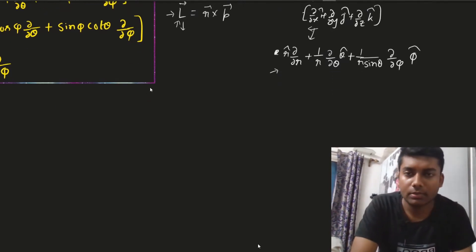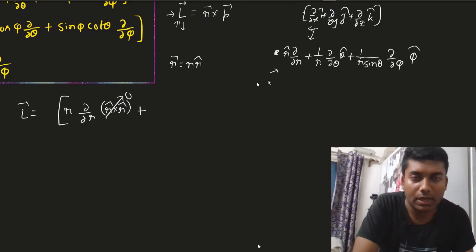Now we have to find this. So l vector is equals to r cross p. So r cross p means r vector is r modulus of r magnitude of r into r cap. So this will r into del del r r cap cross r cap. This is the first term and you can easily understand the r cap cross r cap is equals to 0. So the first term will be 0. Now next term this and this. So this r and this r will be cancelled out and only we're left with del by del theta r cap cross theta cap.